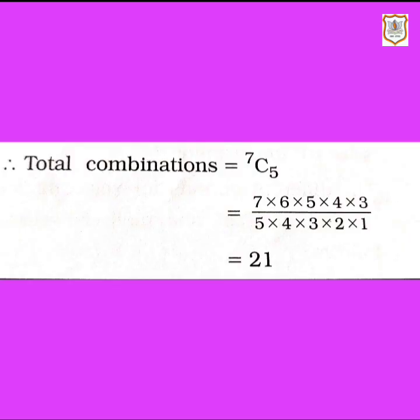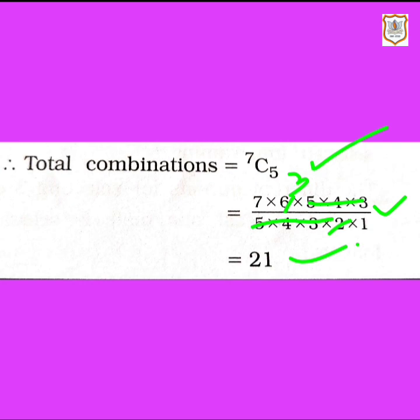The combination for the second condition is 7C5, which can be written as 7×6×5×4×3 / (5×4×3×2×1). The terms 5×4×3 cancel out from numerator and denominator, leaving 7×6 in the numerator and 2 in the denominator, giving 42/2 = 21. So the answer for the second condition — a particular book is never selected — is 21. We have now done sum number 11 and 12. Go through the sums, revise them properly. Thank you.